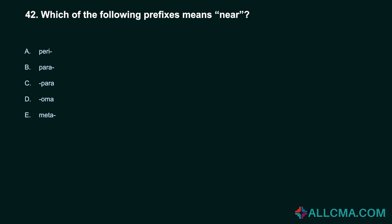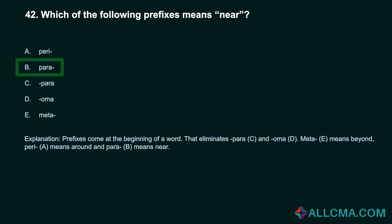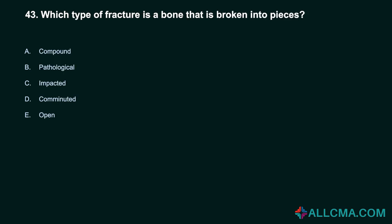Question 42: Which of the following prefixes means near? Correct answer: B, para. Prefixes come at the beginning of a word. Meta means beyond. Peri means around. And para means near.